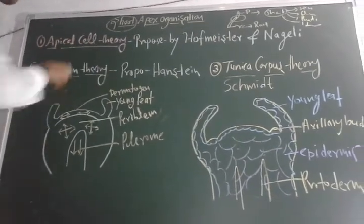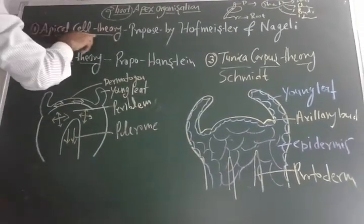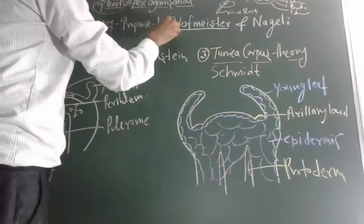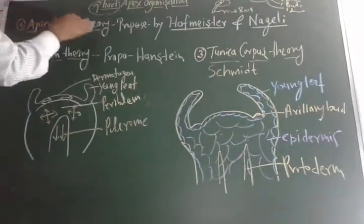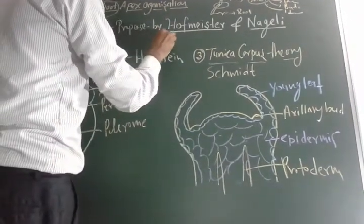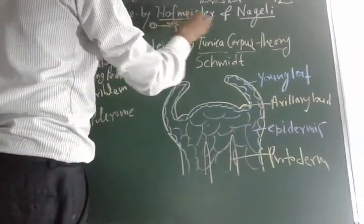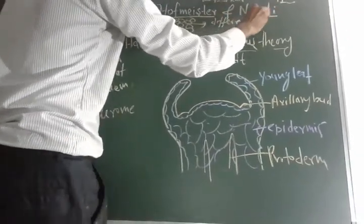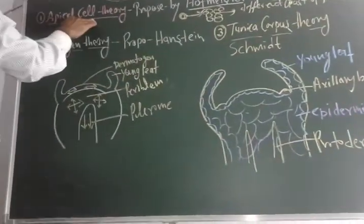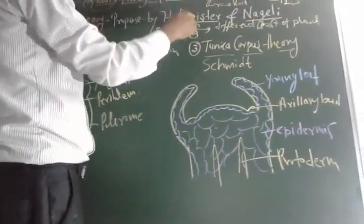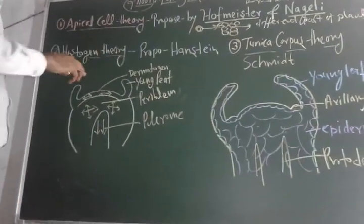The first theory regarding shoot apex organization is called the Apical Cell Theory. Apical Cell Theory was proposed by Hofmeister and Nageli. According to this theory, only apical cells are going to be divided, and that mass of cells again differentiates to form different parts of the plant.